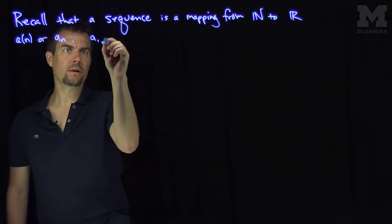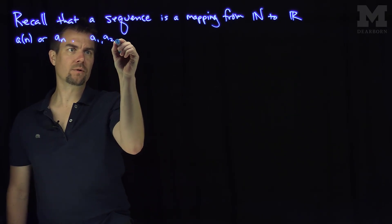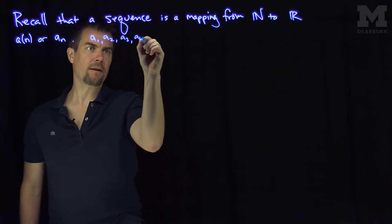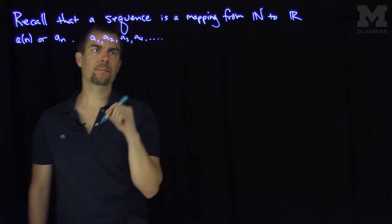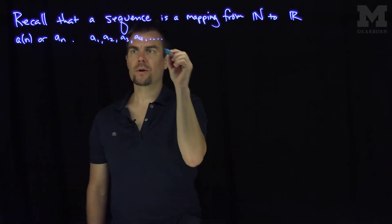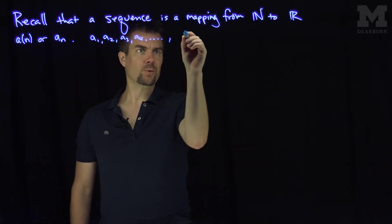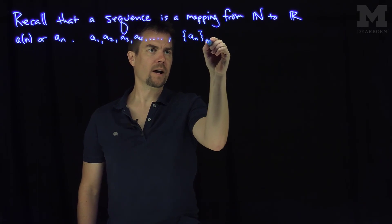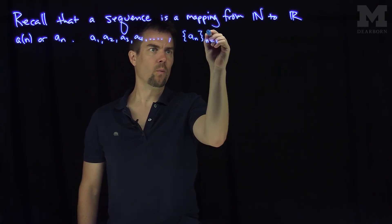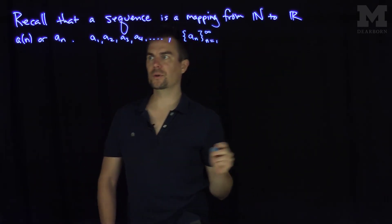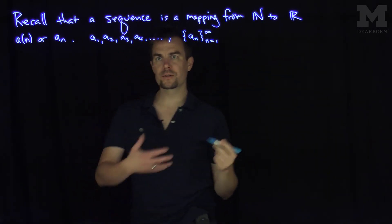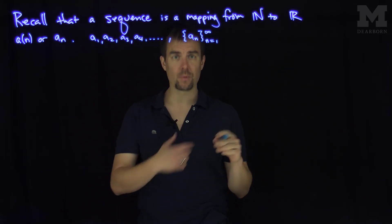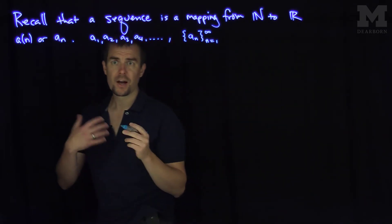We would have a1, a2, a3, a4, etc., going on forever. And we can also write this as brackets a sub n, where n goes from 1 to infinity using the counting numbers. So all of these are just different notations for how we write down what a sequence actually is.